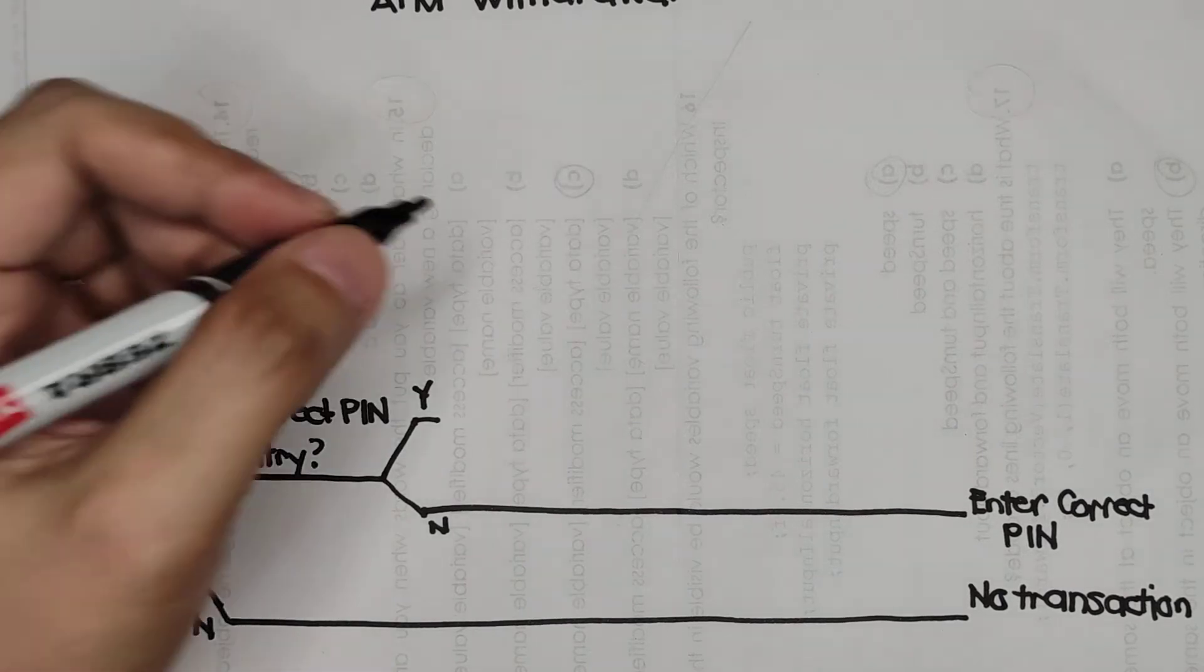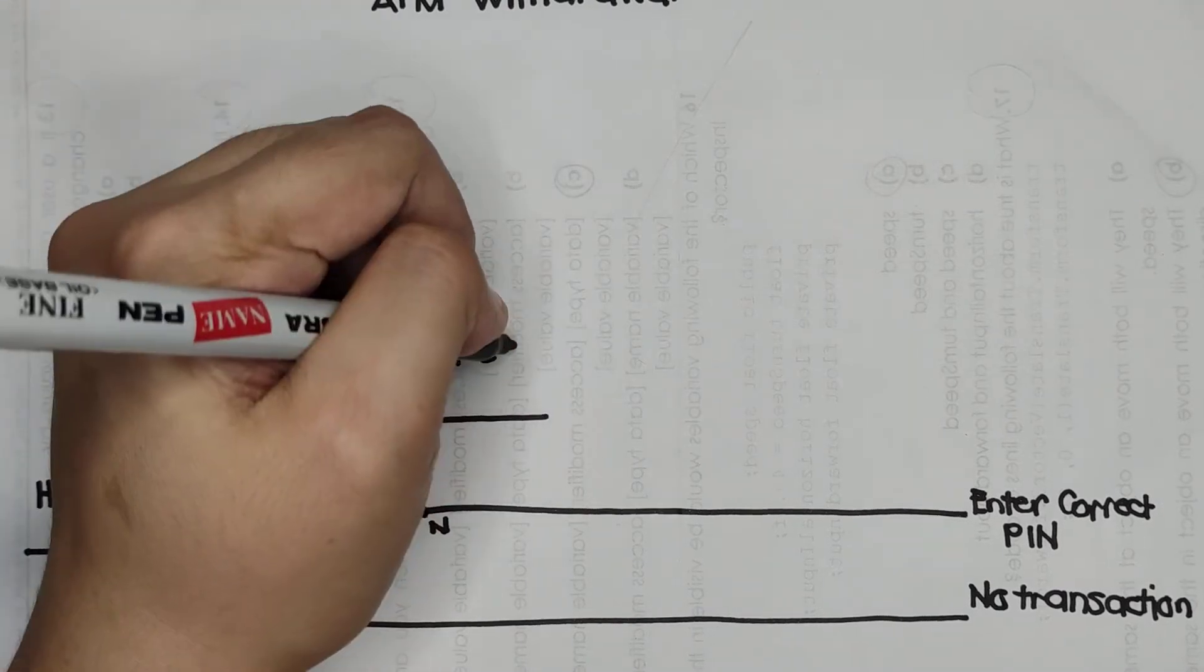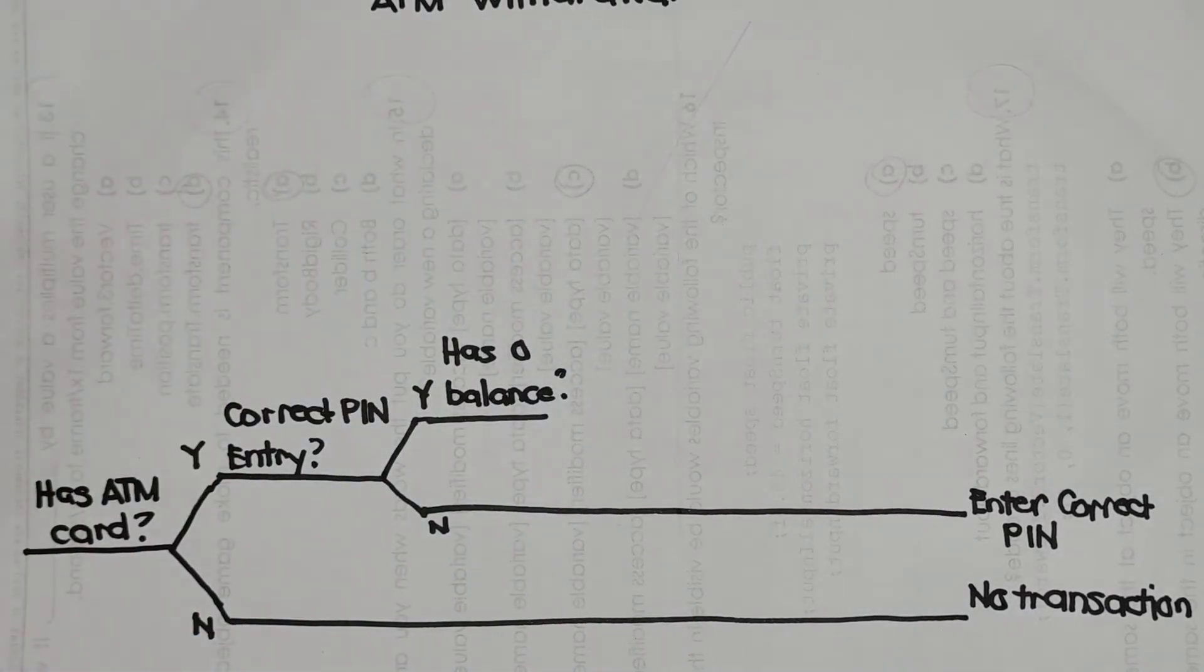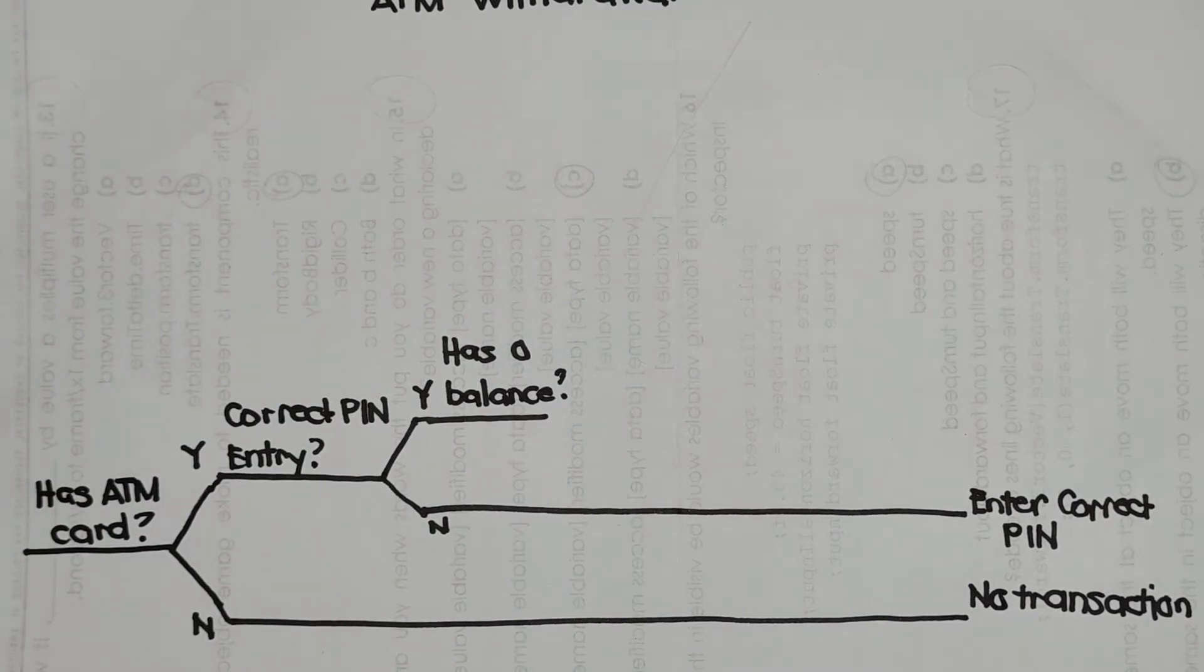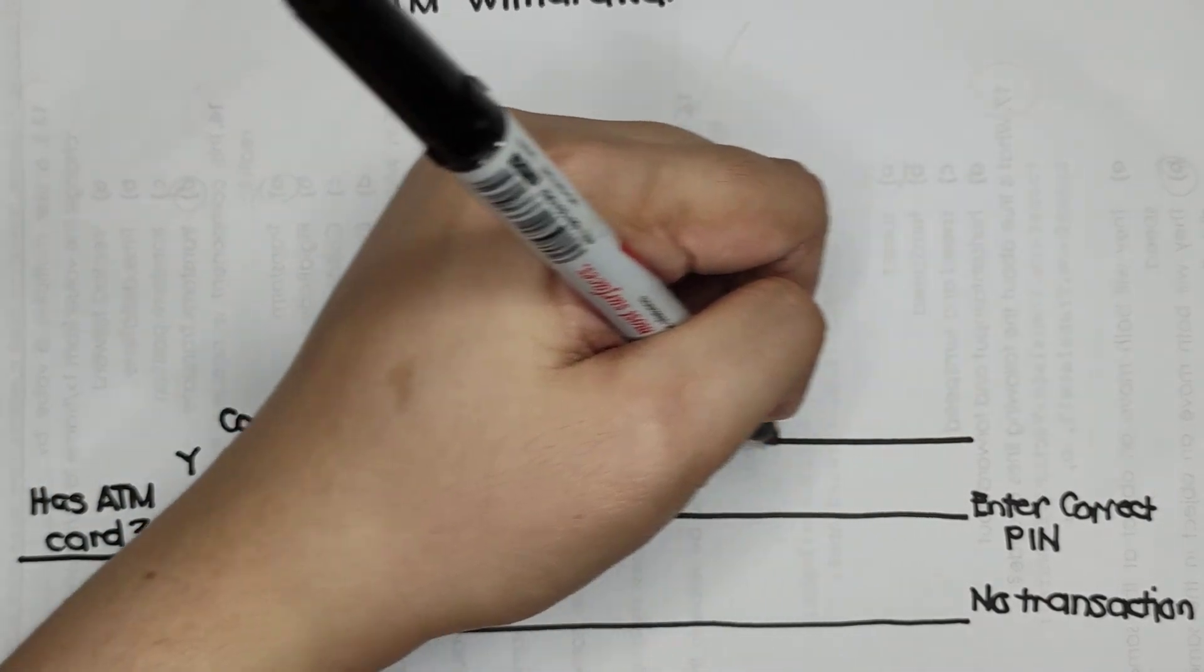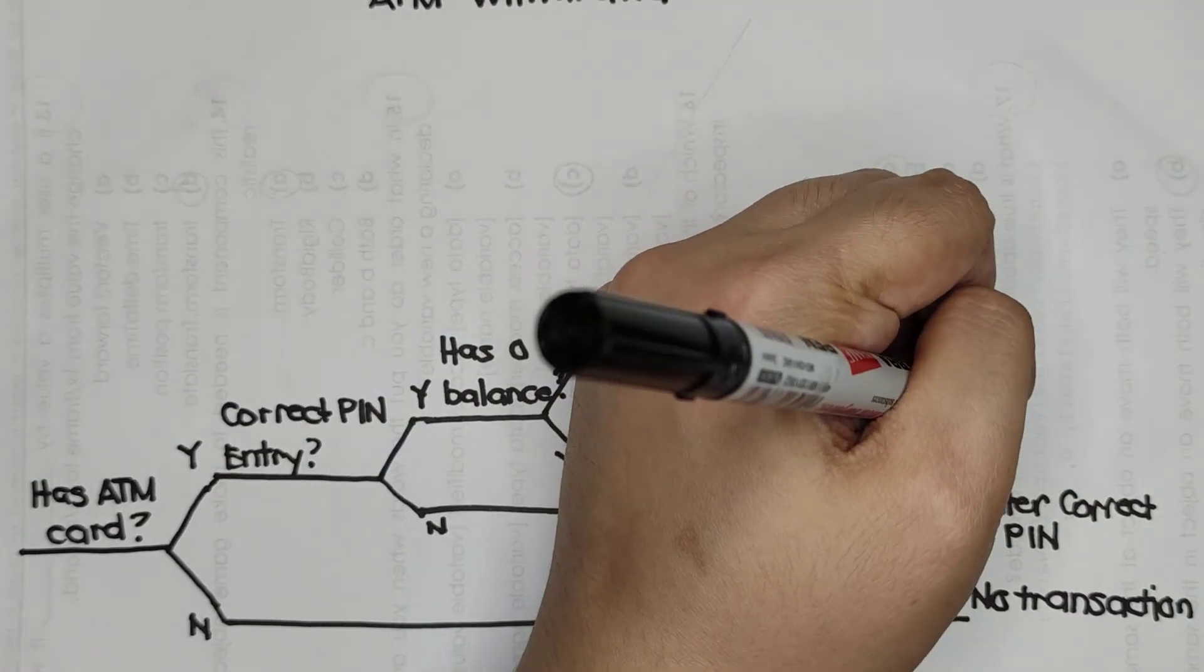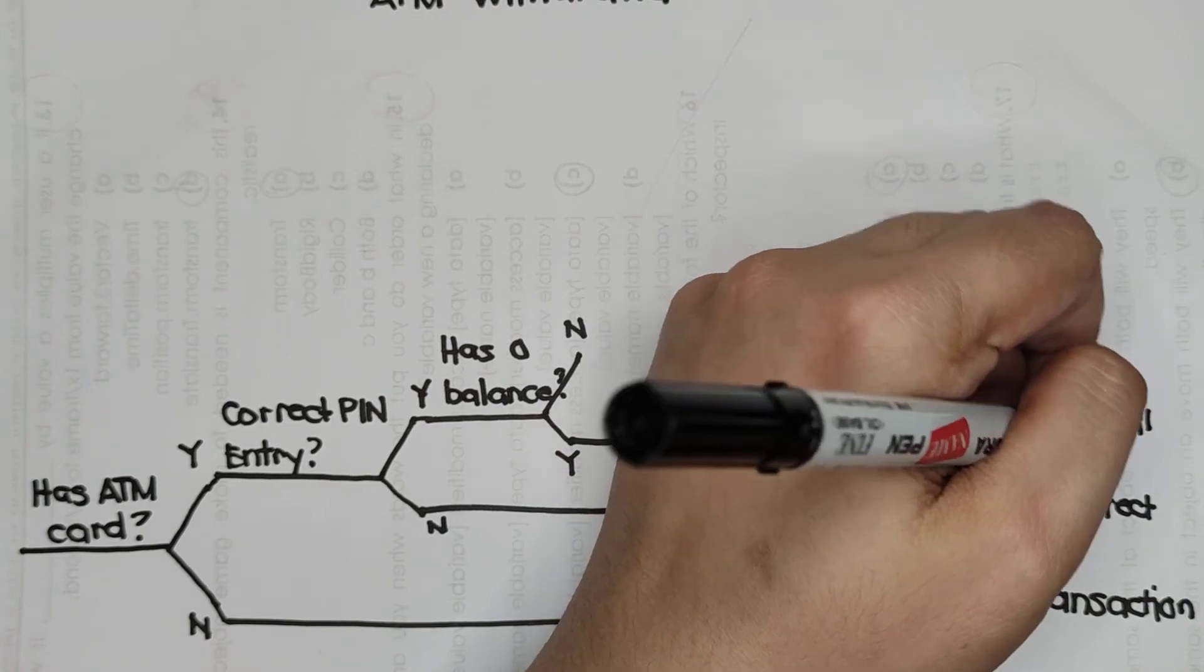The question is: has zero balance? What would be the direction? Will it be a yes or a no? Actually, if it is a yes, meaning it has a zero balance, we will put here the yes and then the no on the upper side. Yes, if it is a zero balance, then withdrawal failed, because you don't have money. If it is not a zero balance, the next question will be...